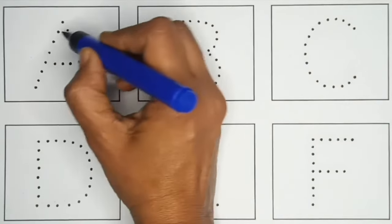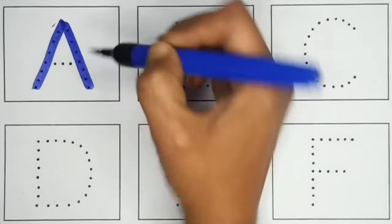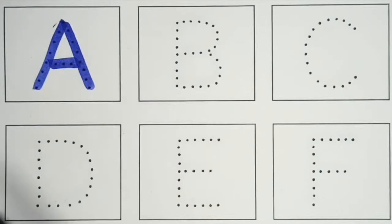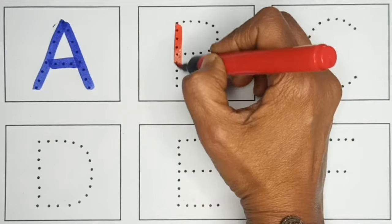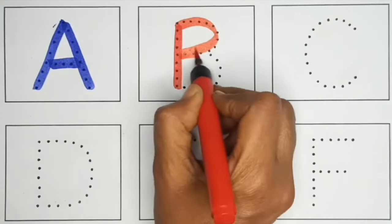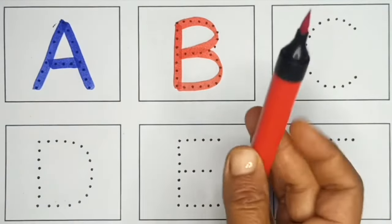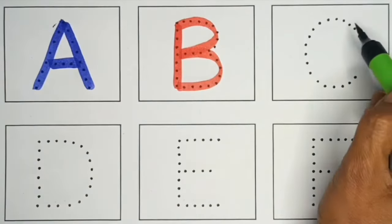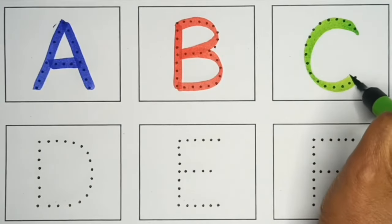Green. A. A for apple. Blue color. B. B for ball. Red color. Blue. C. C for cat.